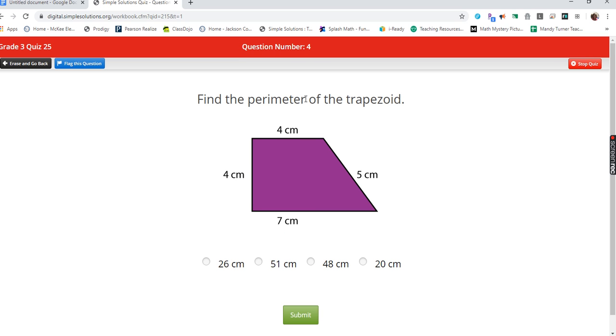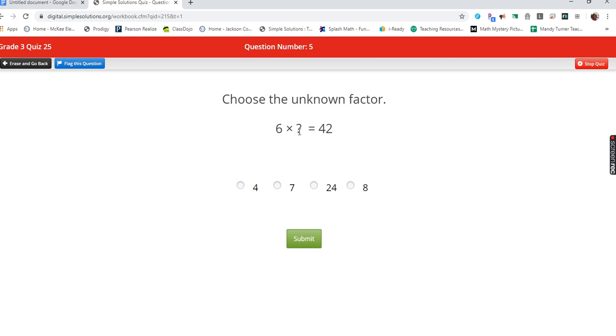Find the perimeter of the trapezoid. Perimeter, so I'm adding the outside. Four plus four is eight, seven plus five is twelve, and eight plus twelve is twenty. Choose the unknown factor. Six times what is forty-two? Six times seven is forty-two. Six times eight went on a date and they came back as 48.